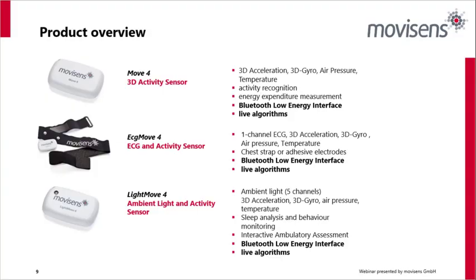The MU-4 forms the heart of our product range. Every component within it — 3D accelerometer, 3D gyroscope, air pressure sensor, proximal temperature sensor — is within all our sensors, and it has excellent activity recognition and energy expenditure measurement combined with our analysis software. Moving to the ECG MU-4, we take everything in the MU-4 and add a single channel of ECG. With the Light MU-4, we add five channels of light, which is excellent for sleep analysis, behavioral monitoring, and circadian rhythm studies.